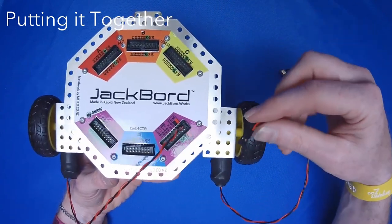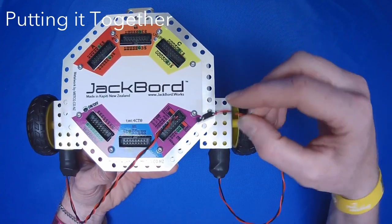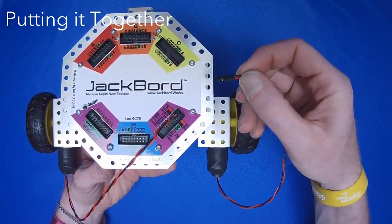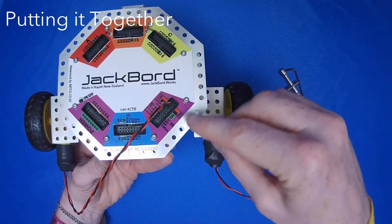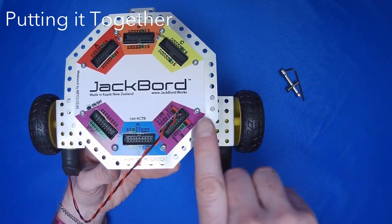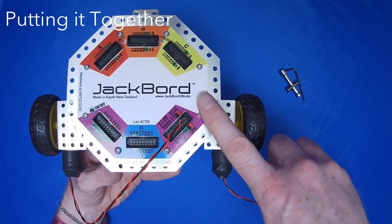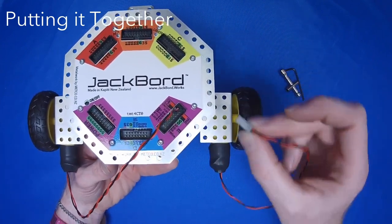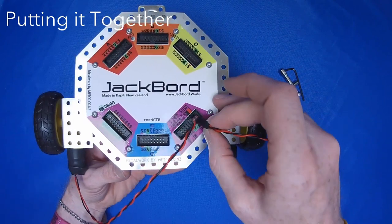And then we do the same for the right motor. Now, if you notice again, you've got the red wire and the black wire. And on the JackBoard, we've got RM, which means right motor. And the red wire goes on this side and the black wire goes on this side. So basically, we take this plug and plug it in.